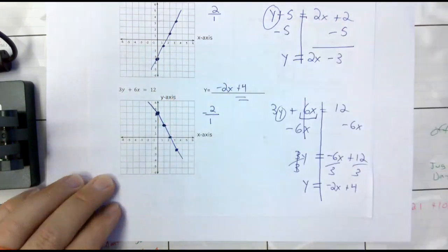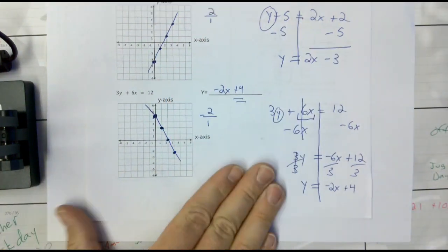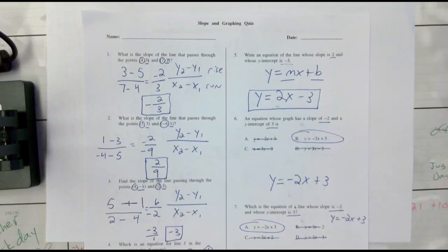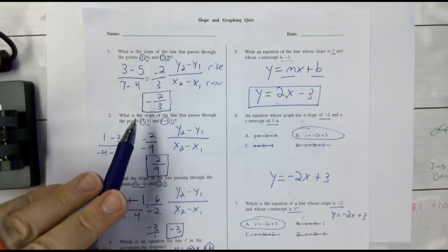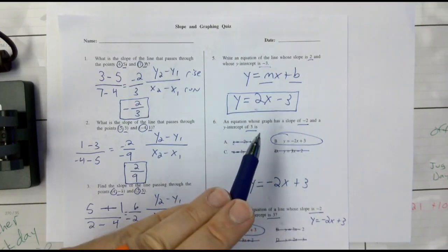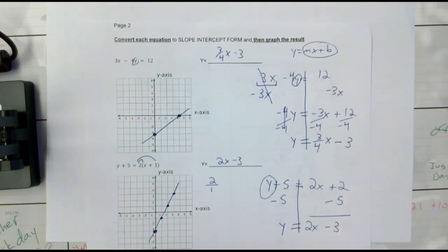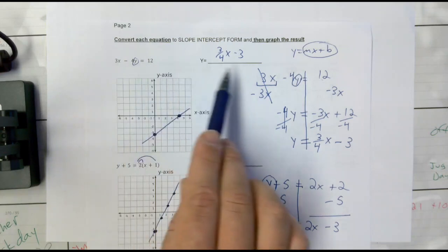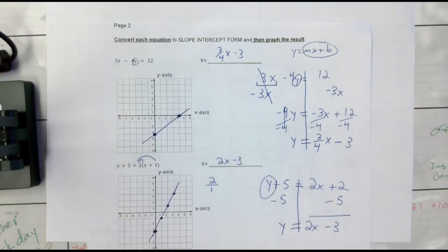Three main areas covered: slope — finding slope using our slope formula; identifying slope and y-intercept and writing equations; and converting equations to slope-intercept form and then graphing. There we go. Thank you, guys.